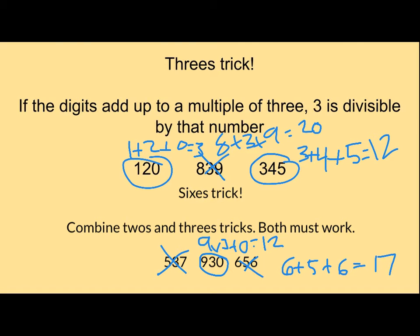So that doesn't work. So the sixes trick just combines the twos and the threes. Those are just some tricks to help you determine what are compatible numbers. It works nicely. But let's go get started into our problem.